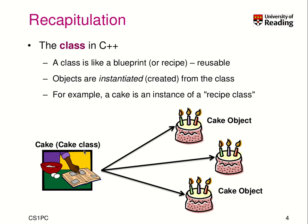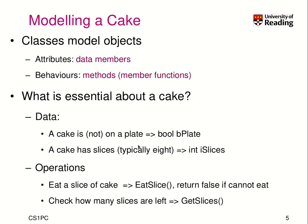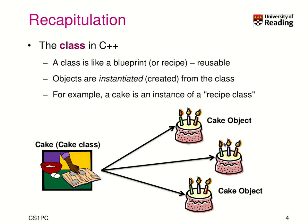It's like on your table with three cakes — the number of slices can be different for all three. And we have behaviors, which are methods — we also say member functions. This is an equivalent term in C++ and Java. These functions belong to a specific object.